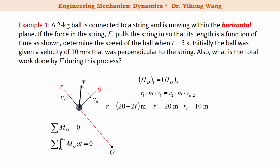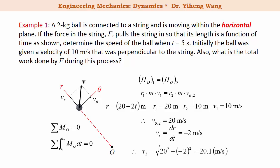At the initial time R1 is 20 meters, and at t = 5 seconds R2 is 10 meters. The initial velocity was a transverse velocity, so from the conservation equation we calculate v_theta2 to be 20 meters per second. That is only the transverse component of the final velocity. The radial velocity equals dr/dt, and since the function of R is given, dr/dt equals negative 2 meters per second, which is constant — the negative sign indicating the radial velocity points toward O. From these, the magnitude of the velocity at t = 5 seconds is calculated to be 20.1 meters per second, answering the first part of the question.